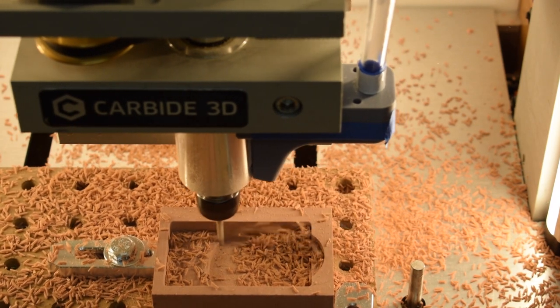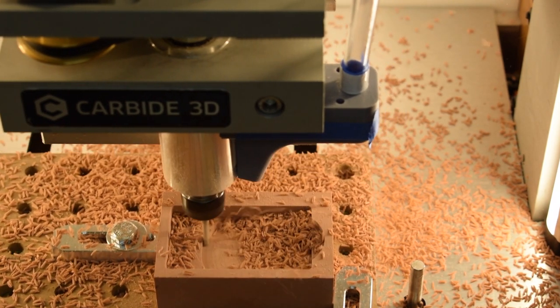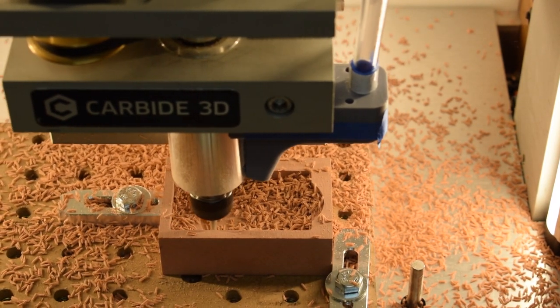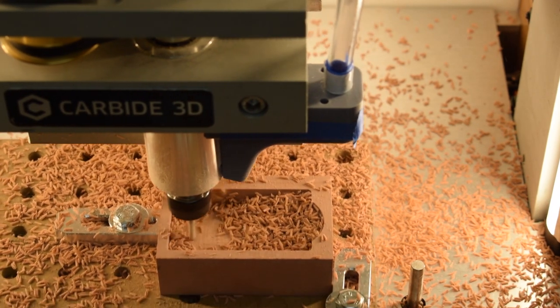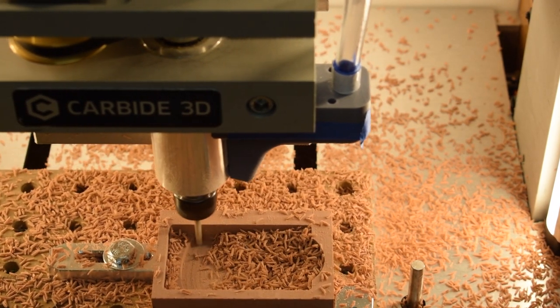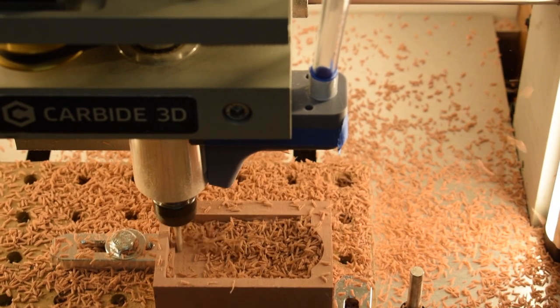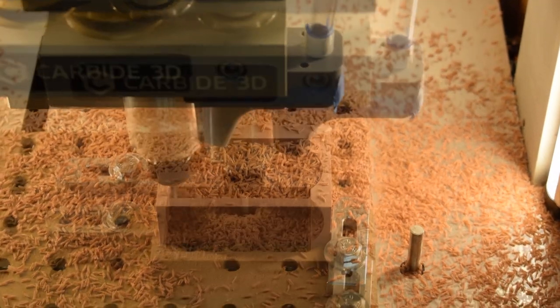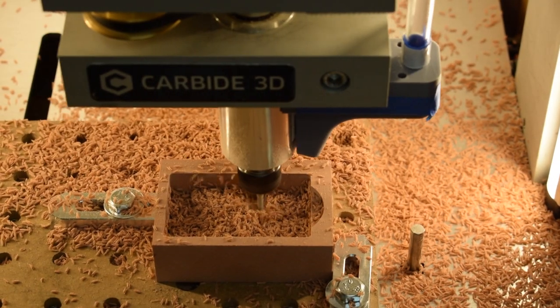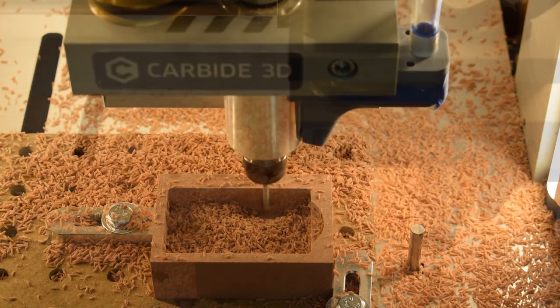And you know what? You can now finally, just barely, hear the Nomad spindle motor straining. Just a little. Renshape is seriously that easy to cut. You could even conceivably use quarter inch tooling in the Nomad to machine Renshape. By the way, to finish this little design that I'm making,